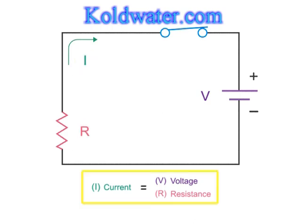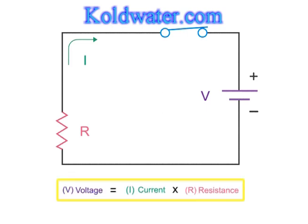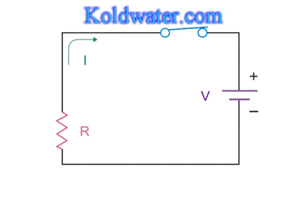This form of the Ohm's law equation allows you to calculate current when voltage and resistance are known. You can also rearrange the components in Ohm's law to solve for voltage, which is current multiplied by resistance, and for resistance calculated when you divide voltage by the current flow of a circuit.